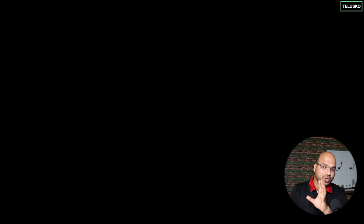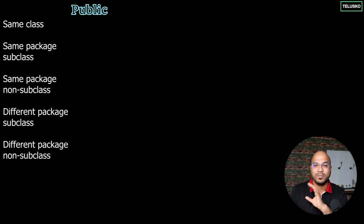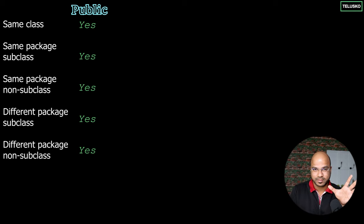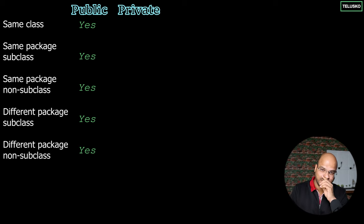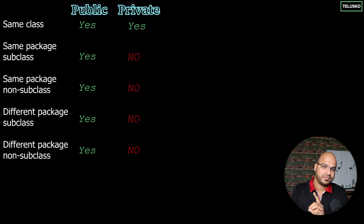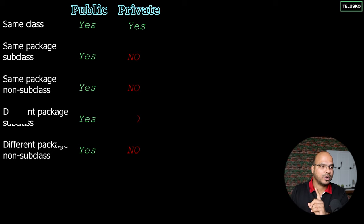Let me reiterate. When you talk about public, it can be used from anywhere. You can see this table — public can be used from anywhere, private can be used from the same class only. Apart from public and private, we have two more. Let's talk about those now.